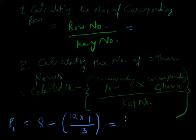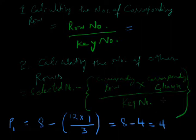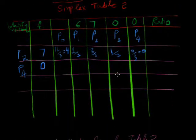We calculate 8 minus 12 dot 3, 8 minus 4. And it is 4. This value is 4. So, like this, this value we write here 4.